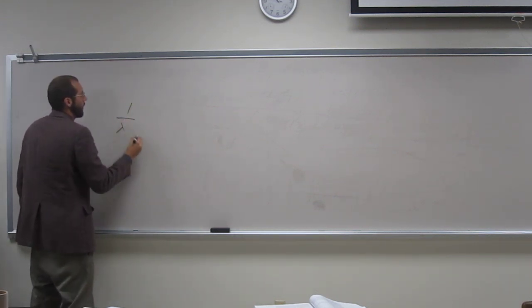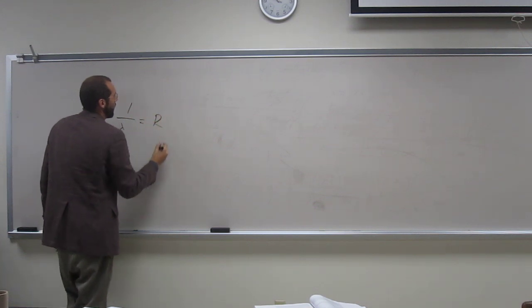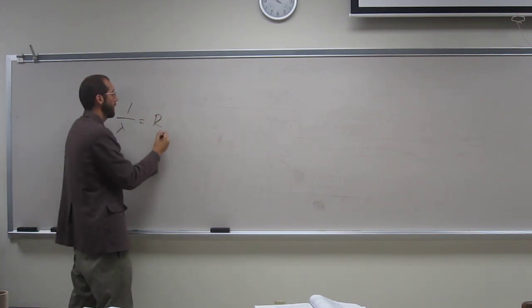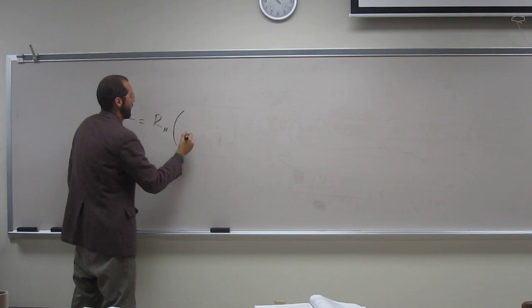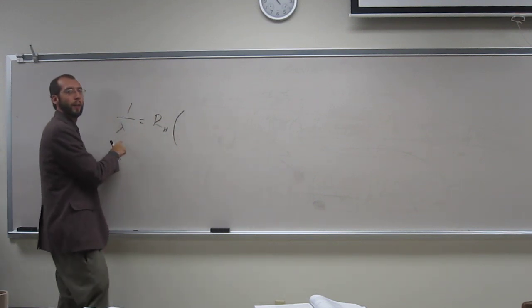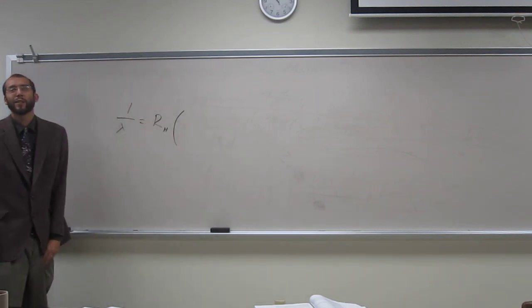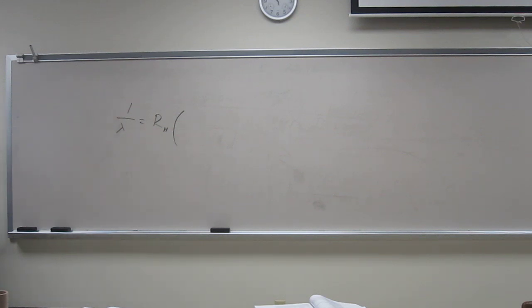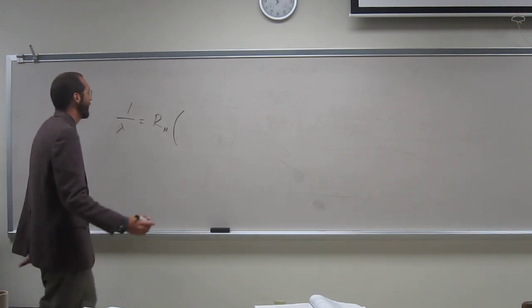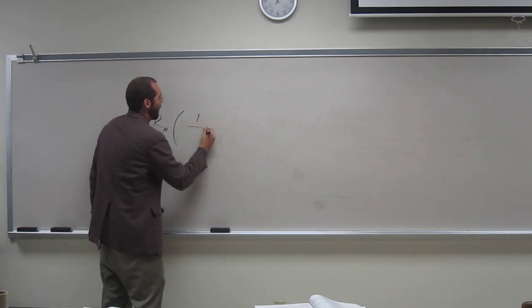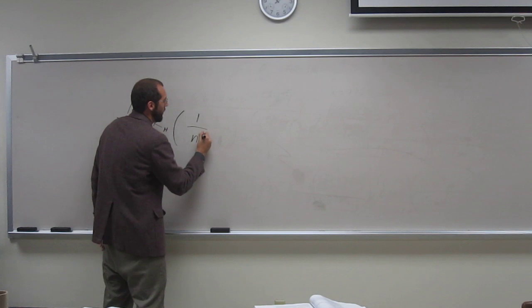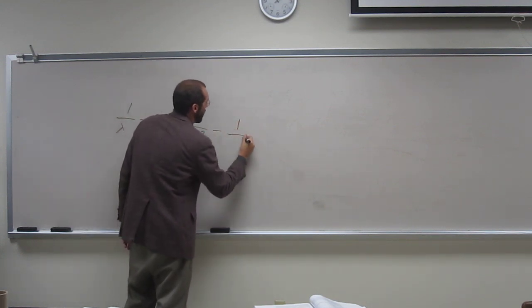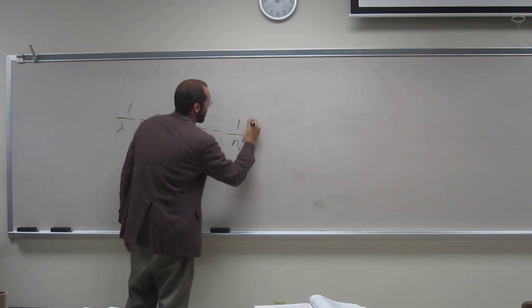So, what's the Rydberg equation? And in this case, lambda. Lambda, yeah, that thing, lambda. So, yeah, this is the start learning the symbol keys on your keyboard, or your Greek letters, if you want to think about it that way. So, 1 over lambda equals R times 1 over n2 squared minus 1 over n1 squared.